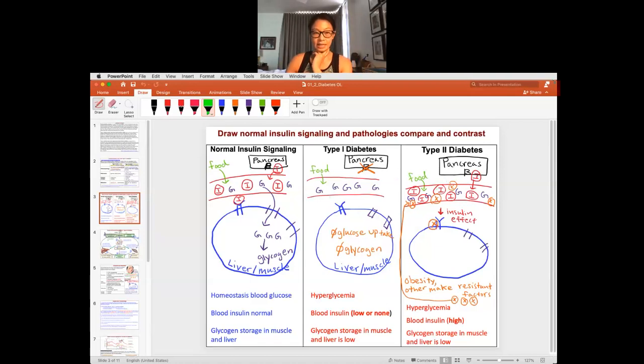In normal individuals with normal signaling, to review what we learned from the last part, the insulin key unlocks the storage in the liver and the muscle, and the glucose goes right in. This also includes the fat cells—I just didn't put it here, but also fat cells.